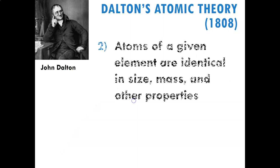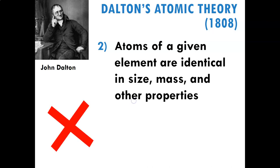The next part is that Dalton thought atoms of a given element are identical in size, mass, and other properties. He thought every atom of carbon was identical to every other atom of carbon, and every atom of hydrogen was identical to every other atom of hydrogen. We now know that to be false. In a little while we'll see why that's not true, but for now we can just put a mark in your notebook that says this piece of his theory was not true.